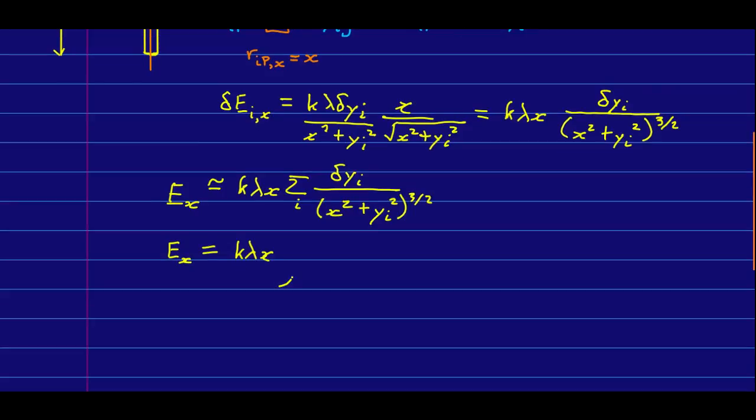And so, everything that has an i subscript on it is losing its i subscript because we're going from discrete chunks that we can index and count to a continuous variation over the rod. And so, the expression will look inside the integral like this.